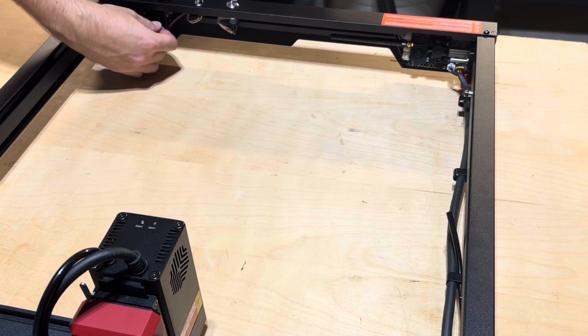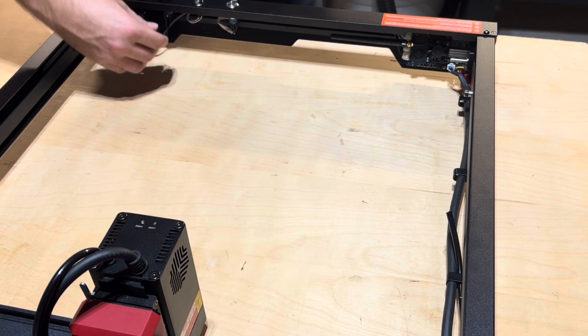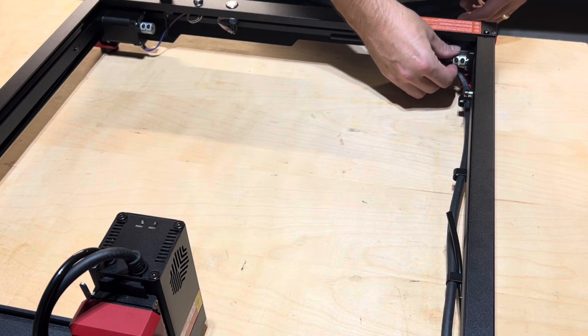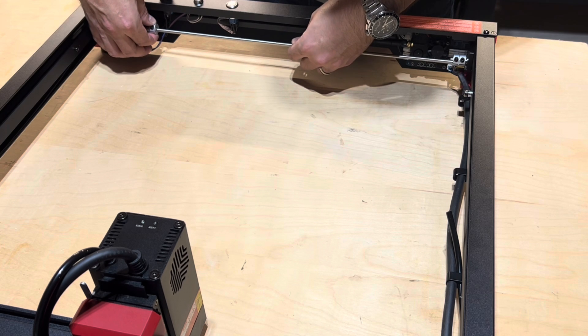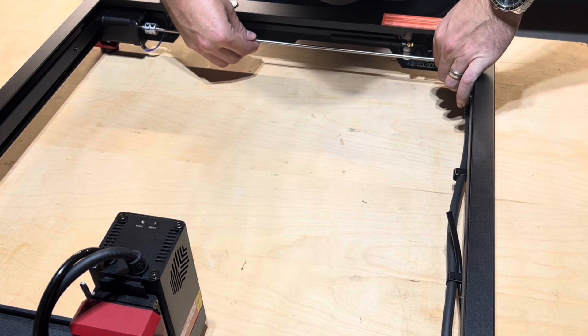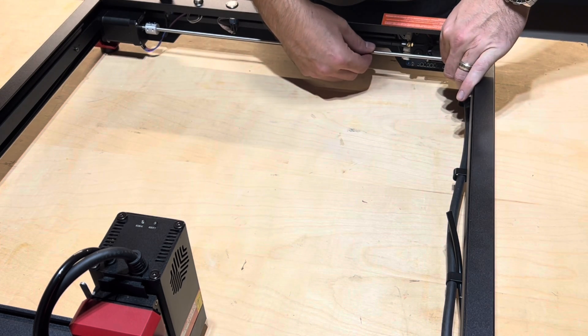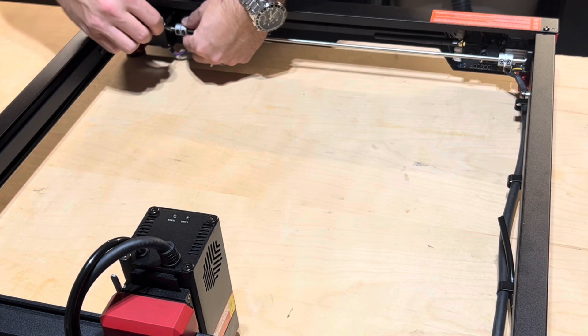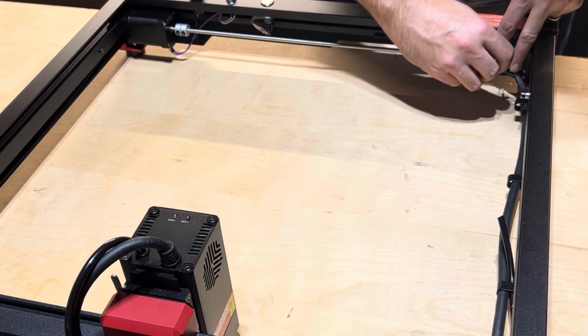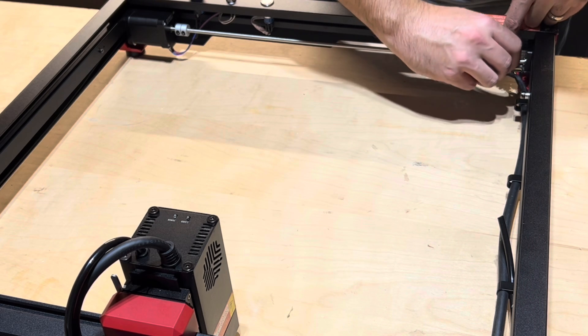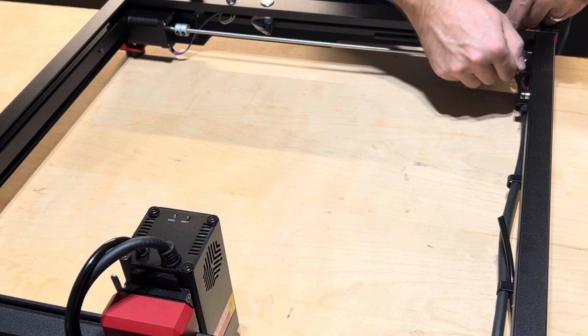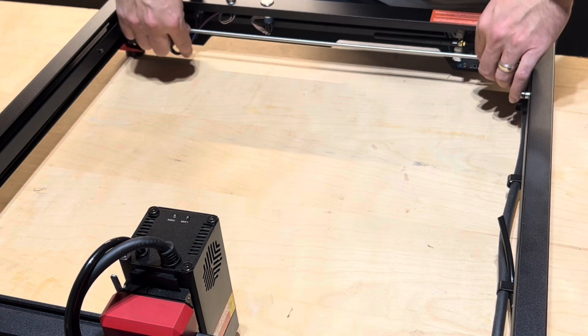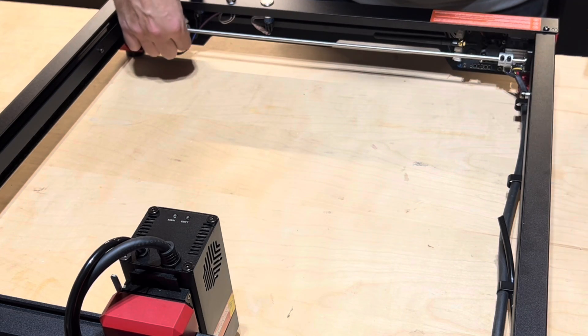Step seven is to assemble the motor extension shaft. Slide on the coupling on each side but do not tighten them down yet. The x-axis must be pushed to the end before installing the motor extension shaft. This is to ensure that the shaft remains parallel allowing the belt to operate smoothly ensuring optimal engraving results. Install the motor extension shaft into each coupling. Tighten down both screws on the coupling on both ends.